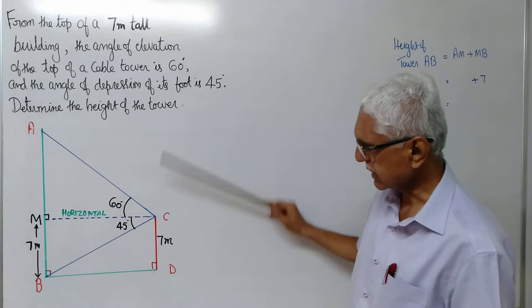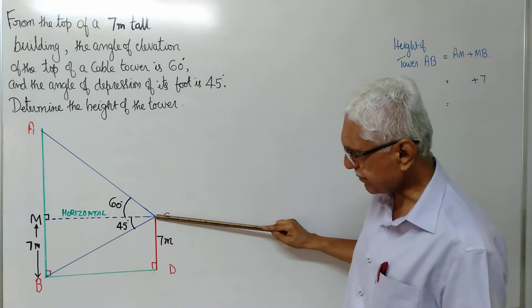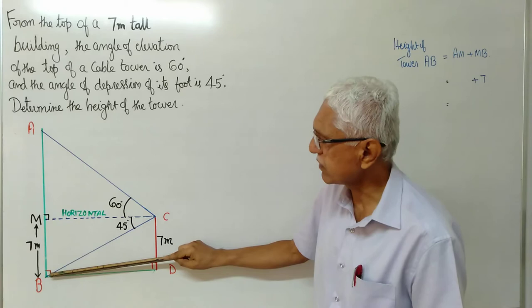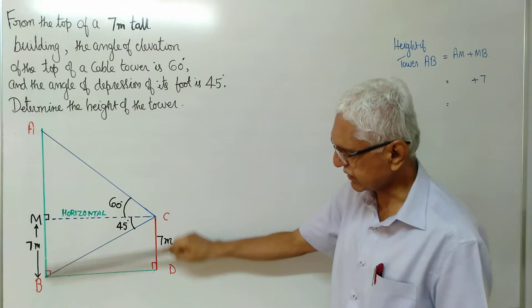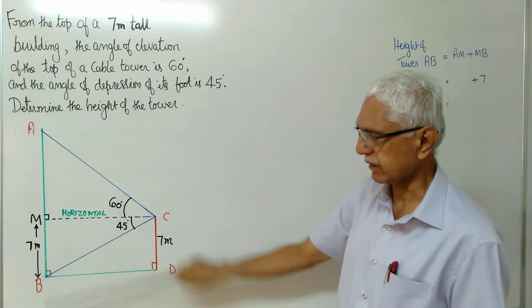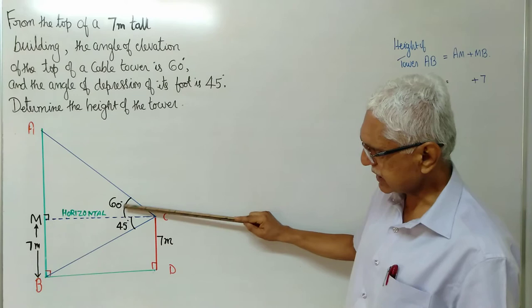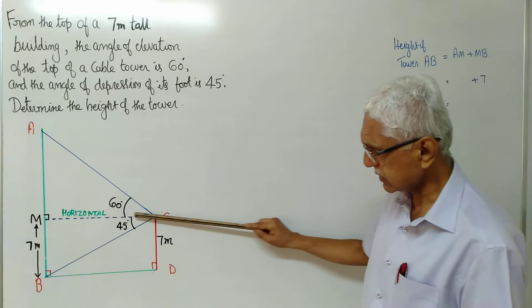Of the top of the cable tower is 60. And from the same point, the angle of depression of the foot of the tower, the angle of depression of its foot, foot of the tower is 45 degrees. Find the height of that cable tower. Please remember, the angle of elevation is made with the horizontal. Angle of depression is also made with the horizontal.